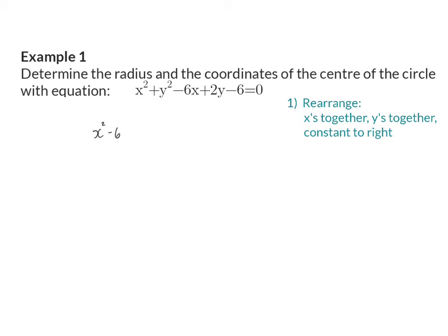So we will have x squared minus 6x plus y squared plus 2y equals 6.